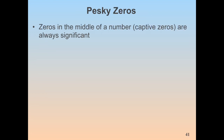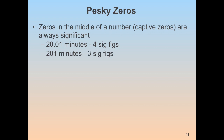Zeros in the middle of a number — called captive zeros — are always significant. So 20.01 minutes has four sig figs, and 201 minutes has three sig figs because the zero is in the middle.